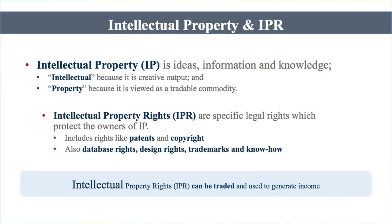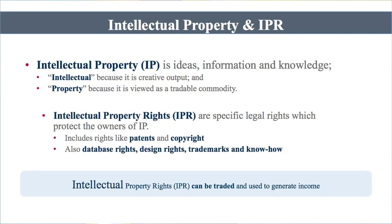After having discussed the differences between discovery and inventions, let us move further. Intellectual property (IP) is ideas, information, and knowledge. It is called 'intellectual' because it is a creative output, and 'property' because it is viewed as a tradable commodity. If you create some intellectual property, you can sell it for monetary consideration. Intellectual property rights are specific legal rights which protect the owners of intellectual property.